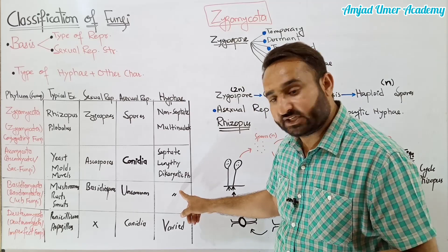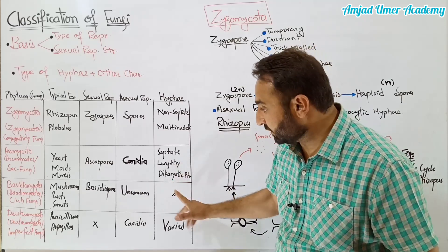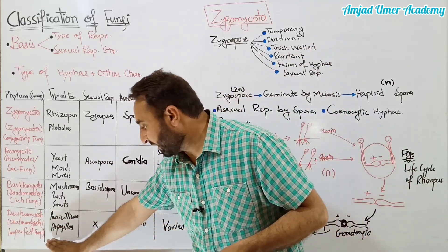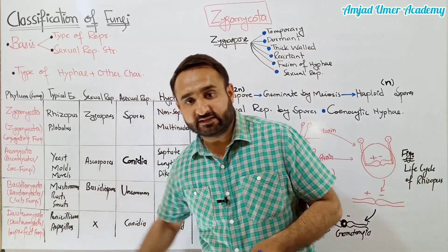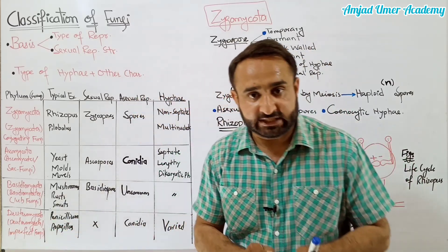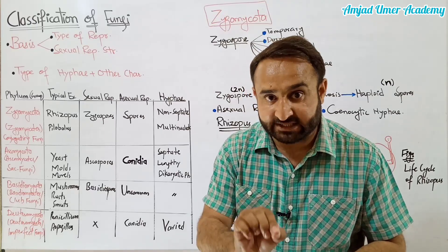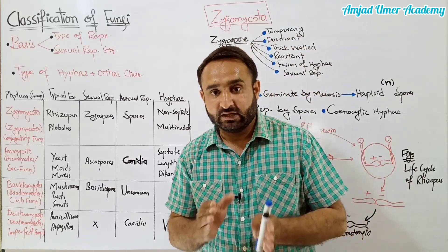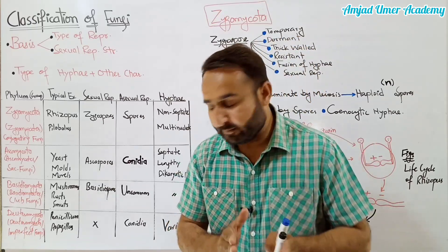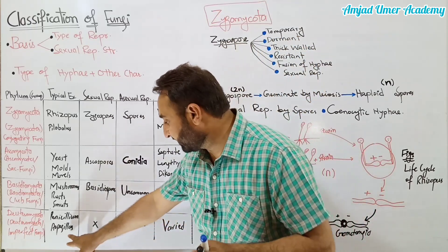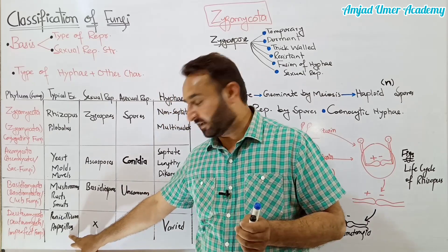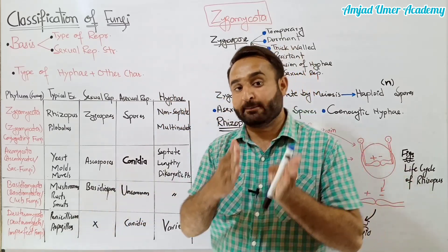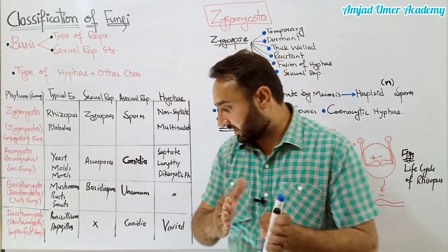Deuteromycota group mein penicillin shamil hai - jo pehla antibiotic tha - jo 1928 mein Alexander Fleming ne discover kiya. Is group mein Aspergillus bhi ek fungus hai. In mein sexual reproduction nahi hoti, is liye inhe imperfect fungi kaha jata hai.